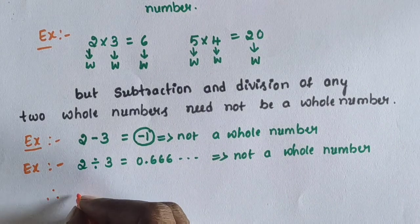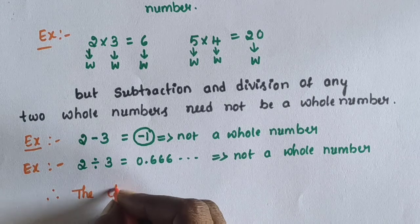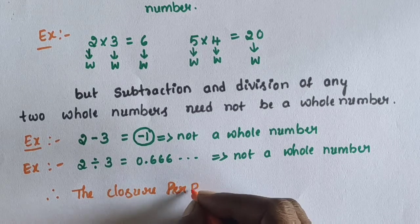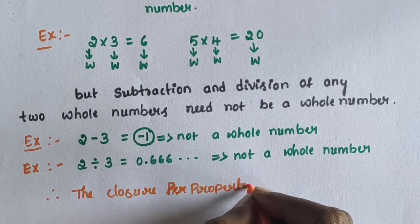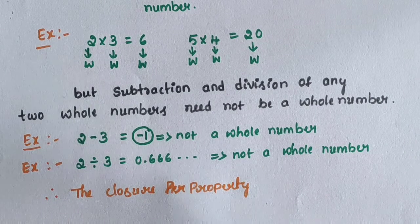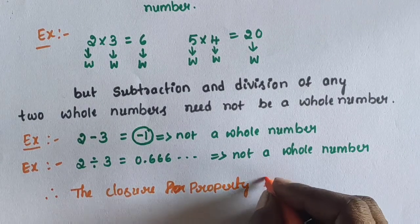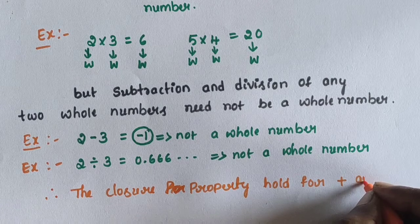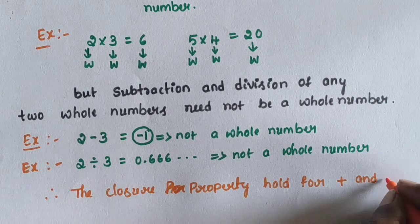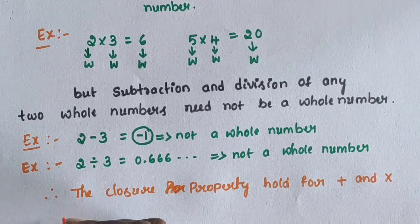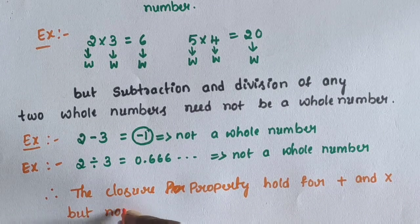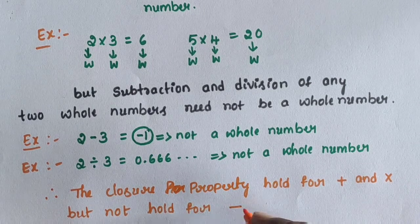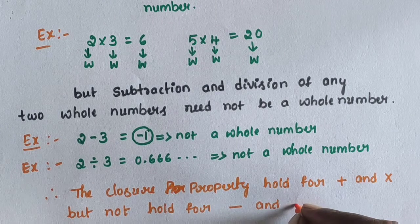Therefore, the closure property holds for addition and multiplication, but does not hold for subtraction and division.